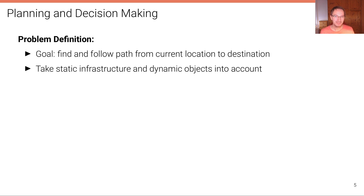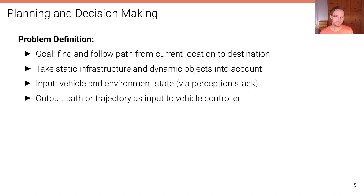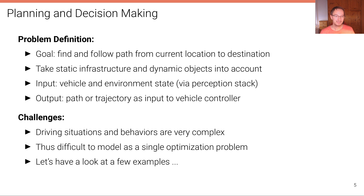Let's define the problem. The goal of the decision making and path planning stage is to find and follow a path from the current location of the vehicle to the destination, while taking the static infrastructure and dynamic objects around us into account. The input is the vehicle and environment state as perceived through our perception stack, and the output is the path or trajectory as input to the vehicle controller. However, driving situations and behaviors can be very complex, making it difficult to model the entire problem as a single optimization problem, so instead we decompose this complex task into a hierarchy of simpler sub-problems.